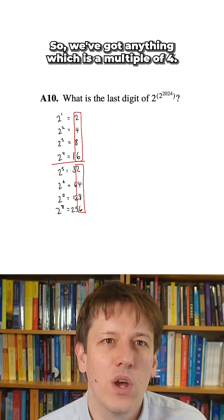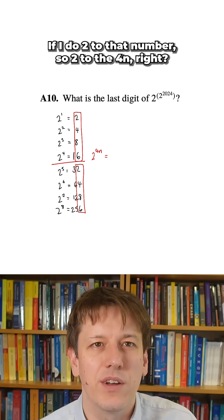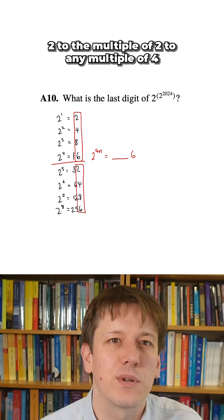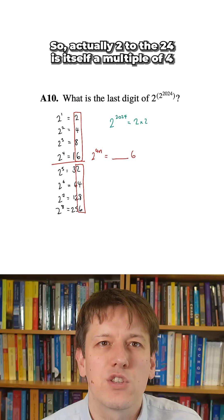So we've got anything which is a multiple of four. If I do two to that number, so two to the four n, right? Two to the multiple, two to any multiple of four, it's going to end in a six because it's just cycling around every four terms.